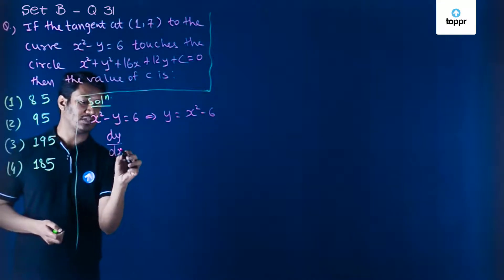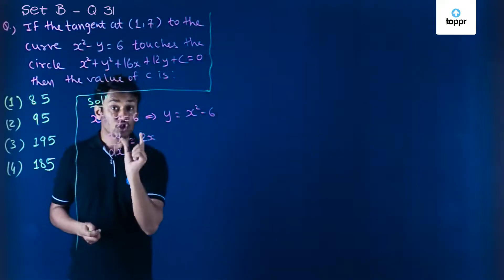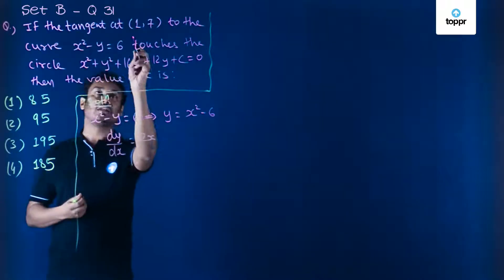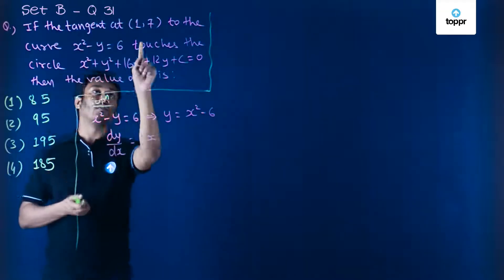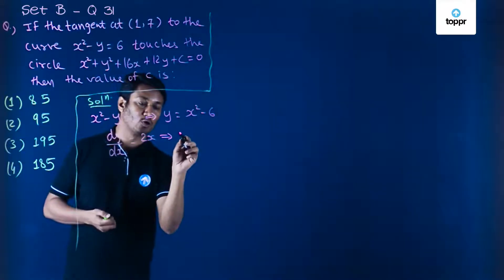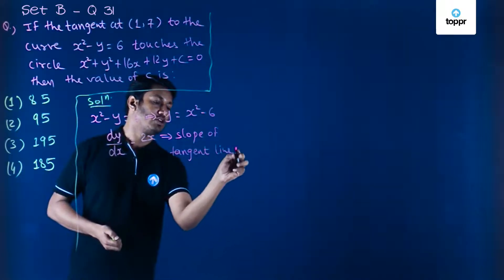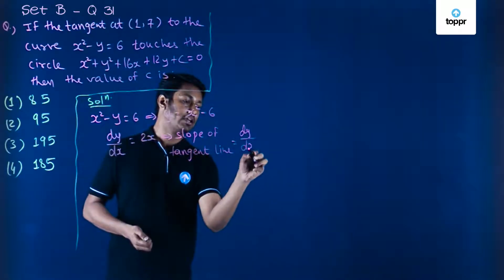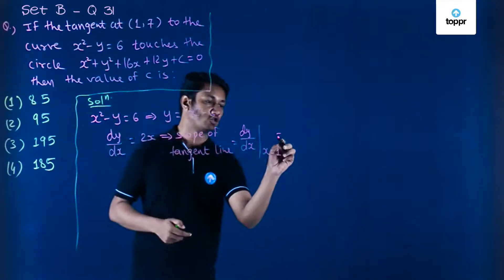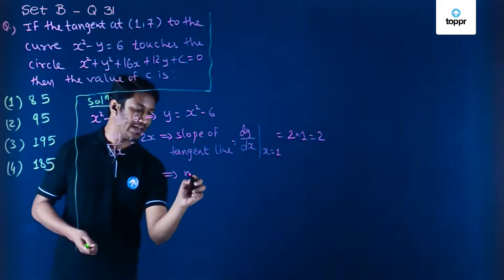We know that the derivative dy/dx in this case will be nothing but 2x. I want to find out the value of the slope of the line, which will be the derivative value at the given point at which the line is the tangent. The line is tangent at (1,7) where x is equal to 1. So dy/dx becomes the slope of the tangent, which is 2 into 1, equal to 2. So I've got the slope m equal to 2.